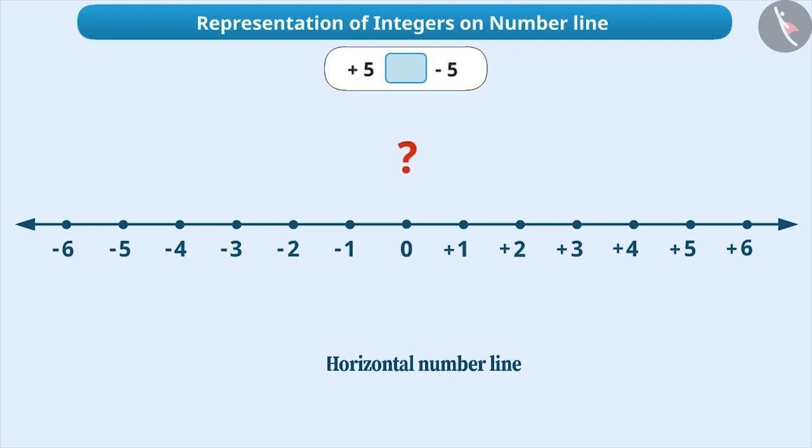Now on the number line, how do we mark plus 5? Well, since plus 5 is a positive integer, move 5 points to the right of 0.